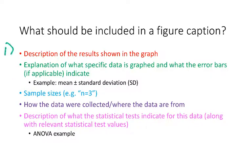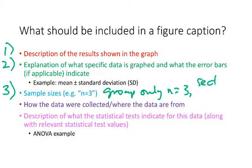Other things we want to include in our figure caption are the sample size — that's often written as n equals 3. The sample size is the number of replicates or the number of individuals you sampled from that population. Thinking back to our simulated experiment in class where we were looking at the CFU per mil in different mice, when we had the group only we had n equals 3, and then our section-wide was n equals 30. So that's something you also want to indicate in your figure caption — how many individuals are in each of the groups you're representing in your figure.